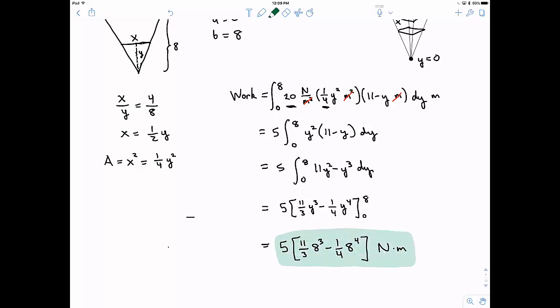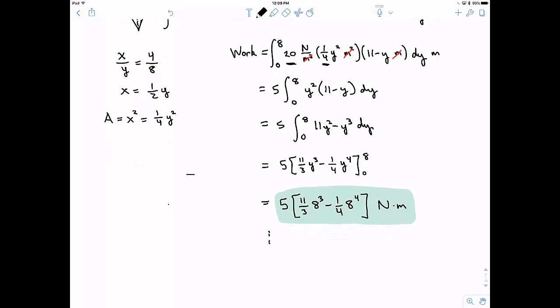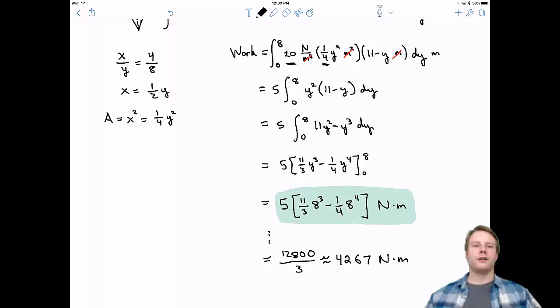But again, if you had all the time in the world or a calculator or something like this, you could simplify this down to 12,800 thirds, or this is the approximation 4,267. And again, those units are newton meters. All right. And that is the end of 5.4 work. Go ahead and get started on your homework problems. And I'll catch you next time. See you then.